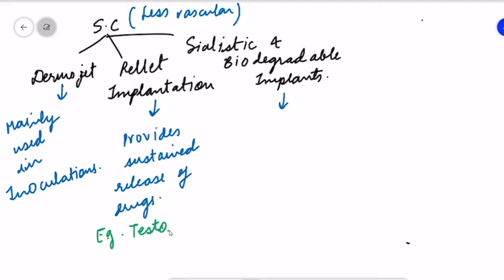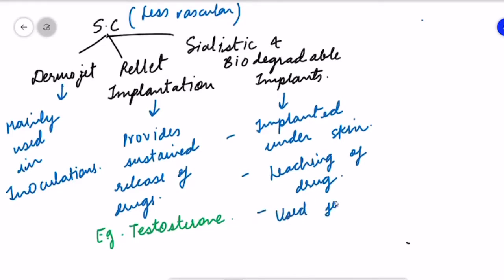Third is salistic or non-biodegradable and biodegradable implants. These are also implanted under the skin and have leaching effects of the drug, so instant blood levels can be achieved. Through this path, hormones and contraceptives have been implanted, for example Norplant. This is very important.